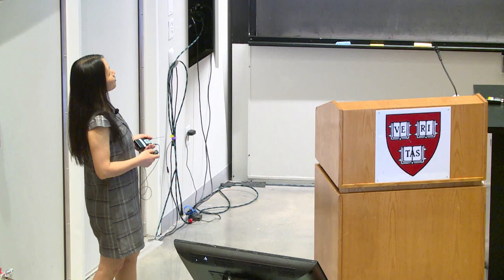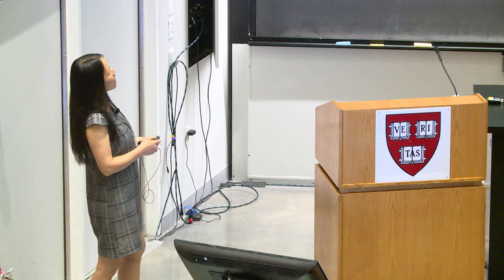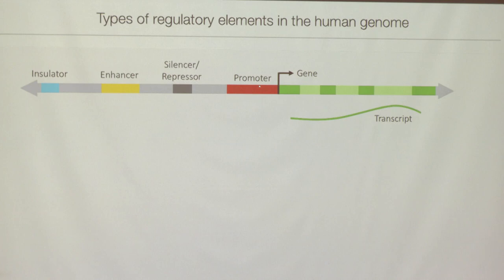Let me give a little intro into what regulatory elements are. The main four types are indicated by color. In red is the promoter element, which is very close to the transcription start site of a gene. The gene will be made into a transcript — an RNA — and then later become protein molecules. The promoter is the bit of DNA very close to the transcription start site and is one major class of regulatory elements.